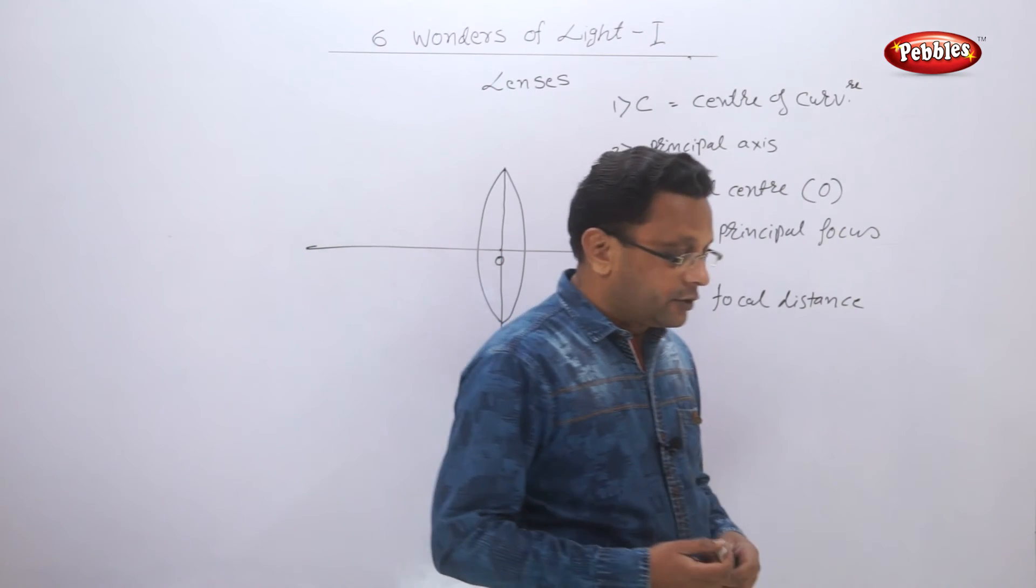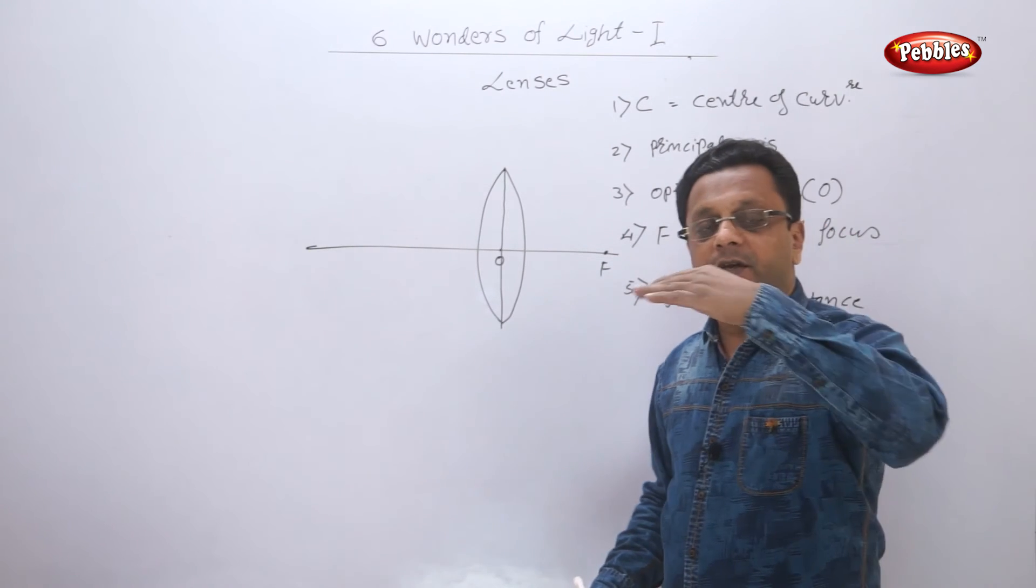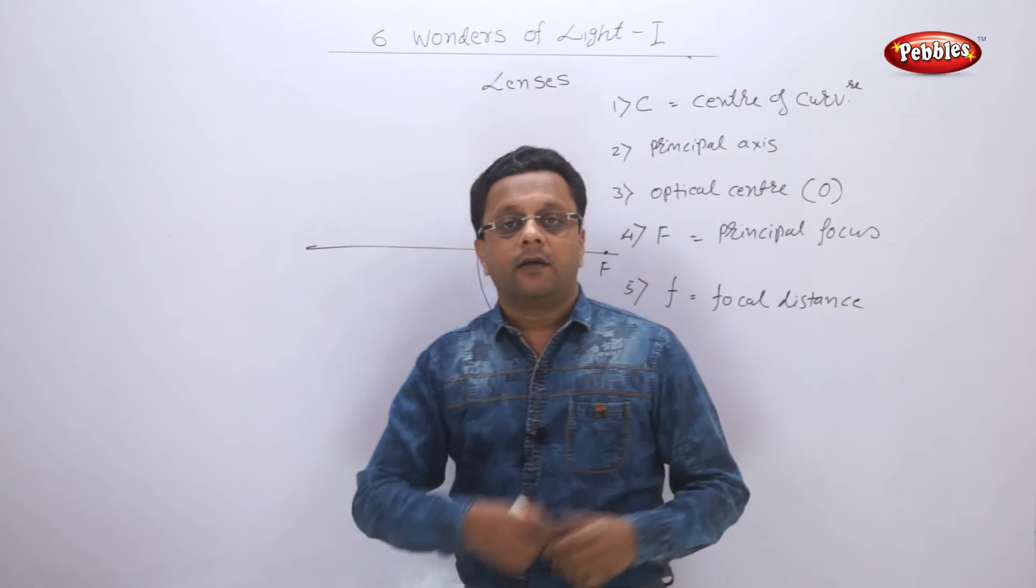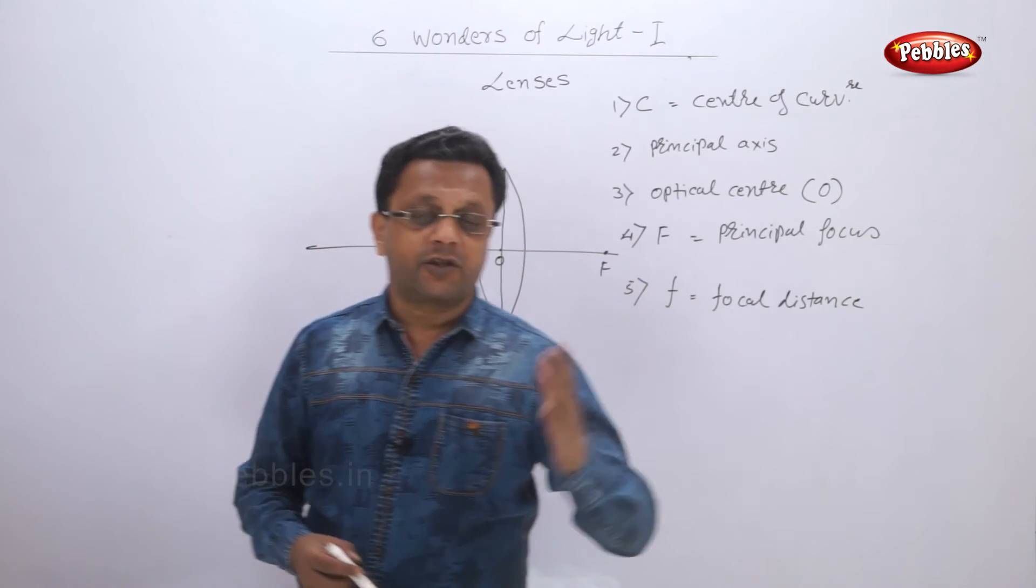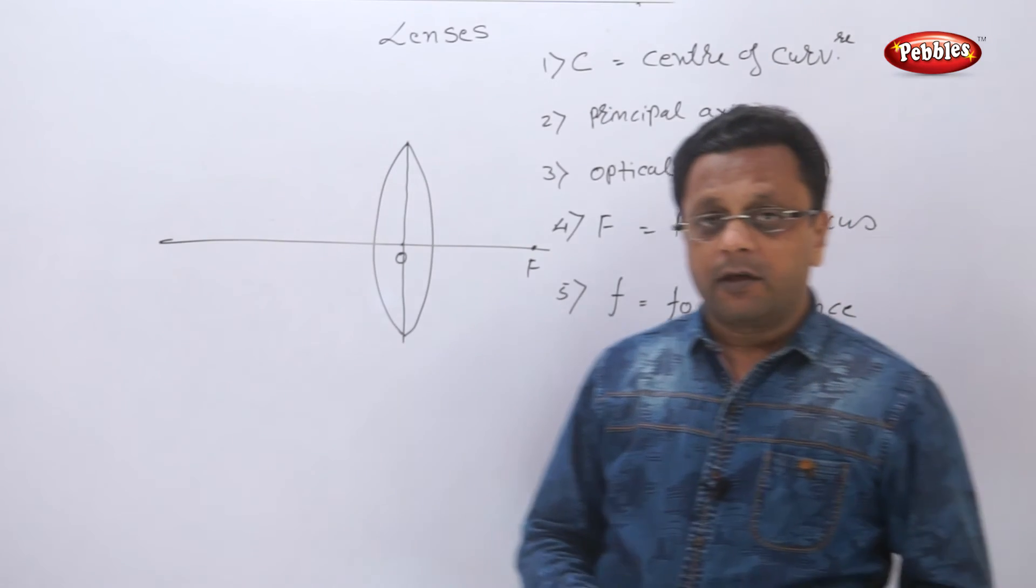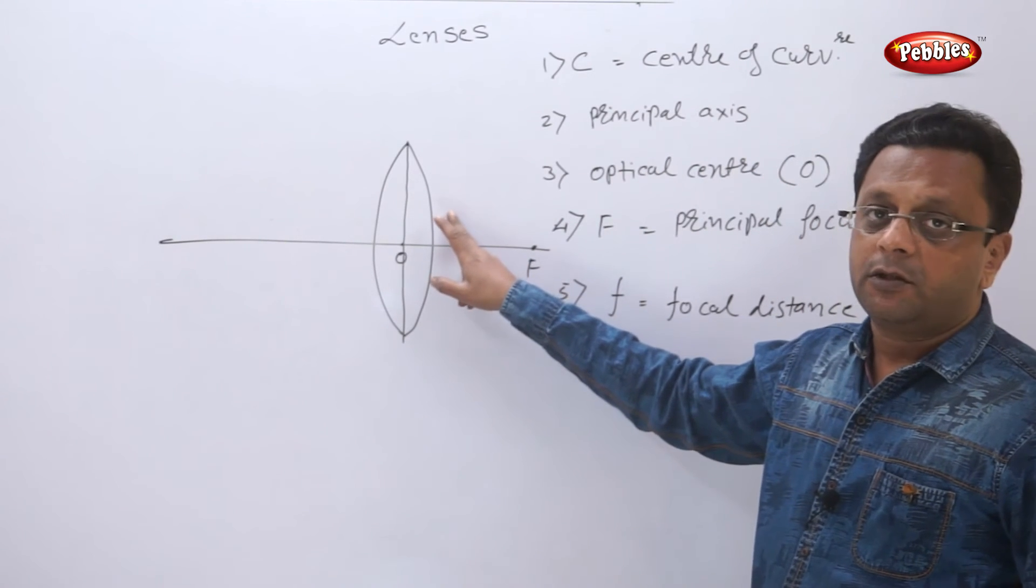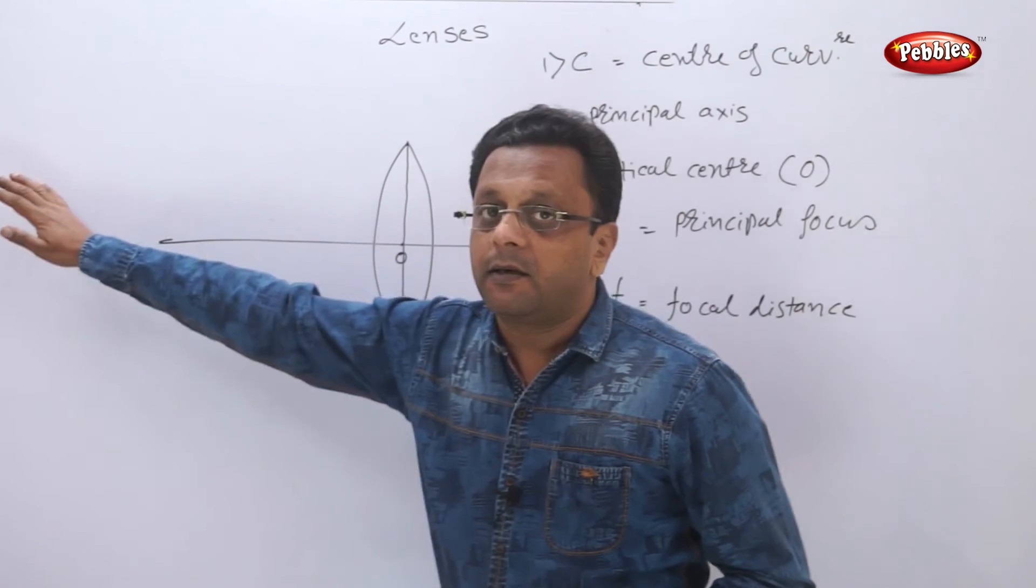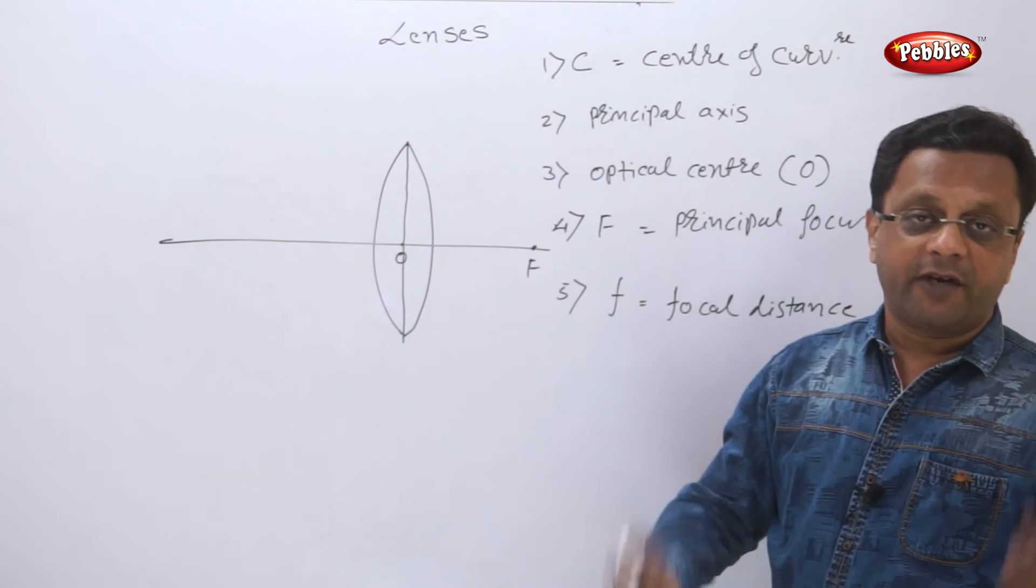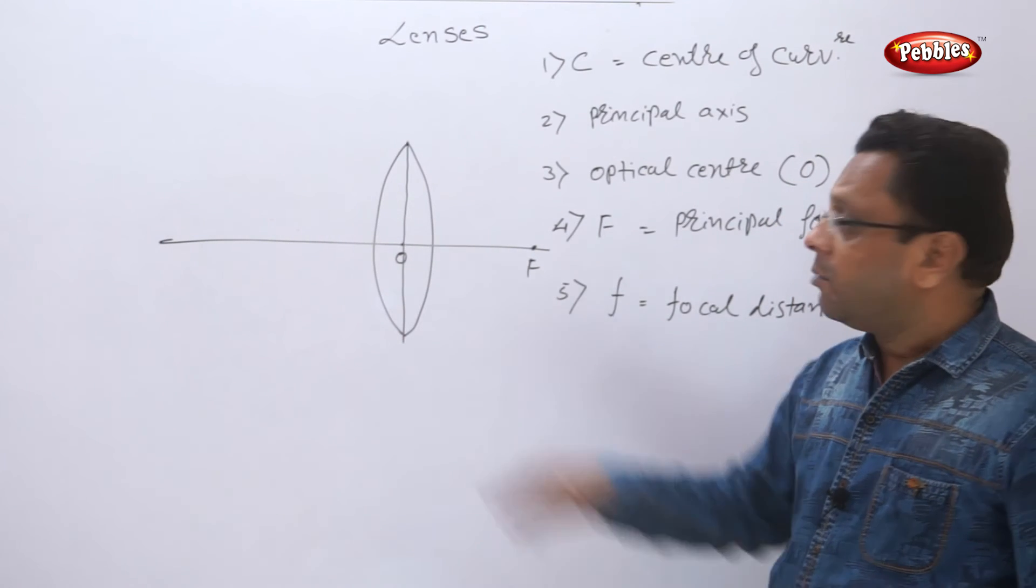Whenever the incident ray falls on the mirror, it bounces back, maybe deviated, but it bounces back. That is called as reflection. The rays are reflected. But whenever the rays are incident on some lens, what happens? They are not bounced back. They pass through the lens, maybe deviated, or if it is passing through optical center, it goes in a straight line.